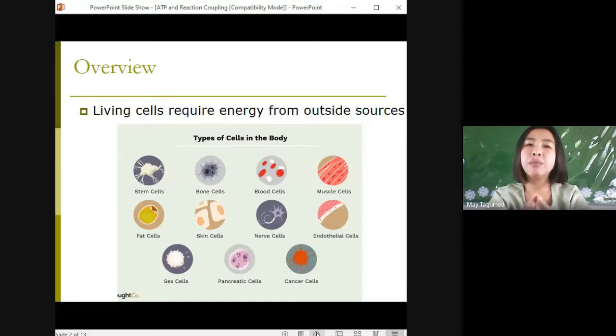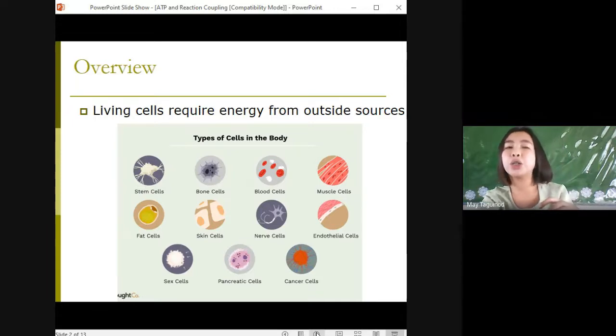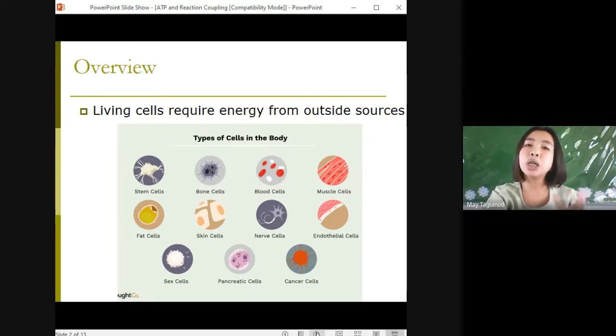So as an overview for our topic, living cells require energy from outside sources. Some animals obtain energy by eating plants and some animals feed on other organisms that eat plants. Energy flows into an ecosystem as sunlight and leaves as heat. And photosynthesis generates oxygen and organic molecules which are used in cellular respiration. So basically cells use chemical energy stored in organic molecules to regenerate ATP which powers work.